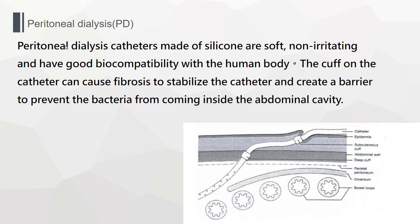Next, we can take a look at the picture in the lower right corner. The abdomen can be divided into three layers: the skin layer, muscle layer, and abdominal cavity. After many discussions with the client, we came up with a simpler teaching aid with only two layers. All our silicone has passed the biocompatibility test. The peritoneal dialysis catheter made with silicone is softer, non-irritating, and has great biocompatibility. The curves on the catheter cause fibrosis to stabilize it and create a barrier to prevent bacteria from entering the abdominal cavity.